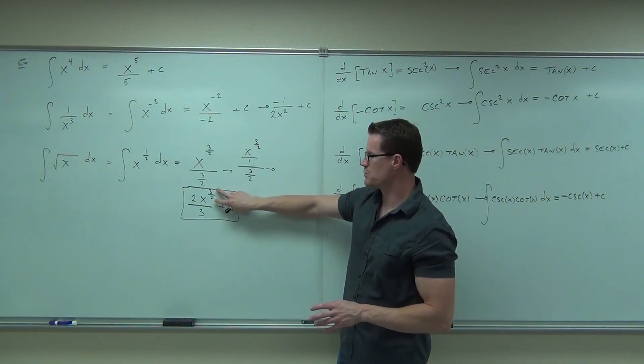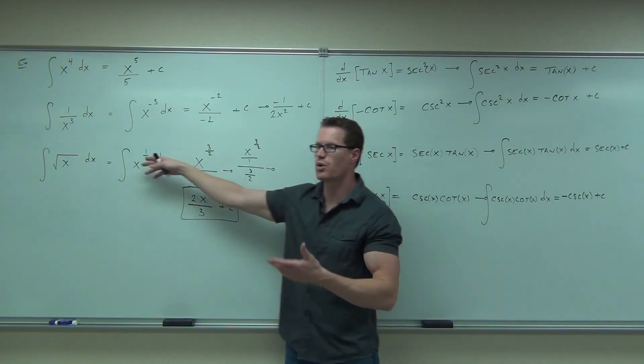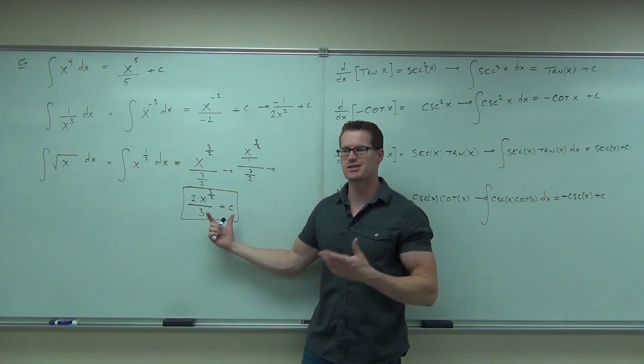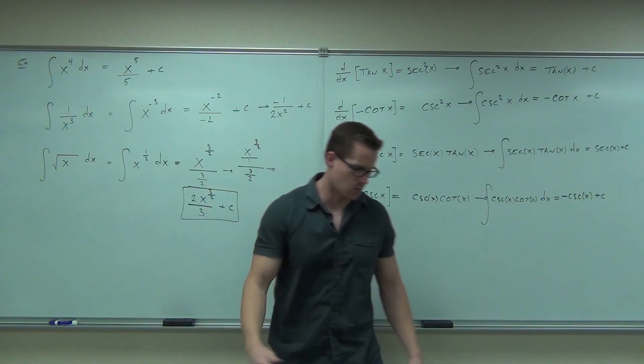You notice a couple things about this. Firstly, did I put the plus c right when I did the problem? No. Not really. We only need the very end. Just the very end. You can ignore it as long as you don't forget about it altogether. Put it at the very end. Also, could you check this with the derivative? Let's see. Derivative says you multiply by that. Hey. There goes the 2 thirds. Subtract 1 from it. There's the 1 half. The c's gone because c's a constant, right? Derivative of a constant is 0. That's the correct answer. That's what we need to be getting.